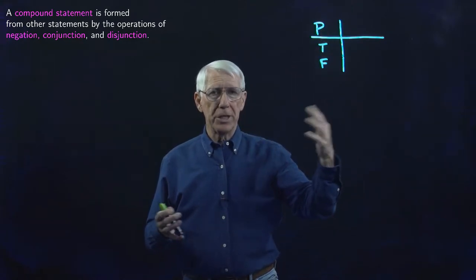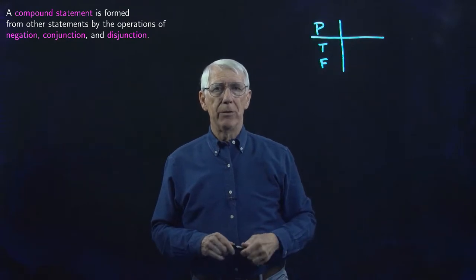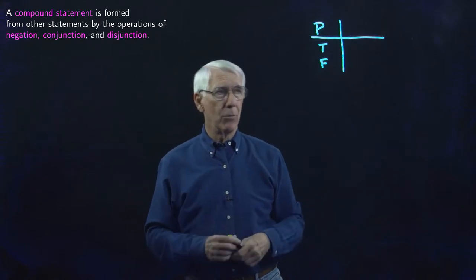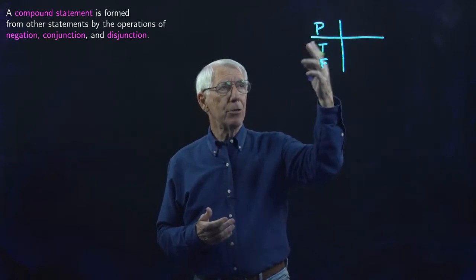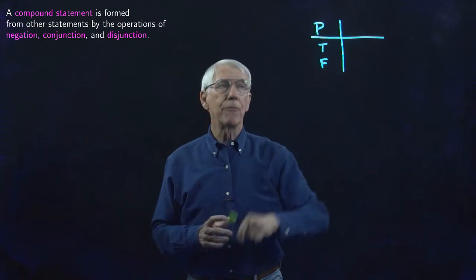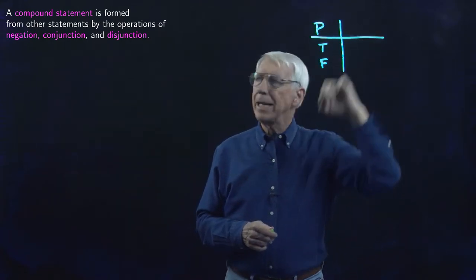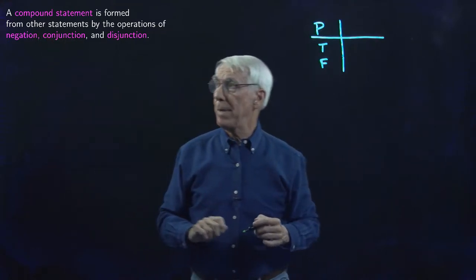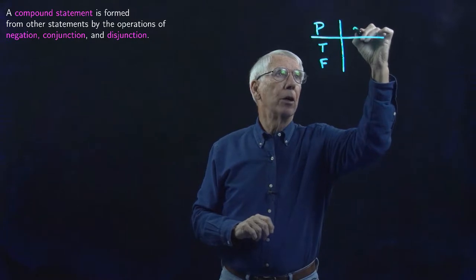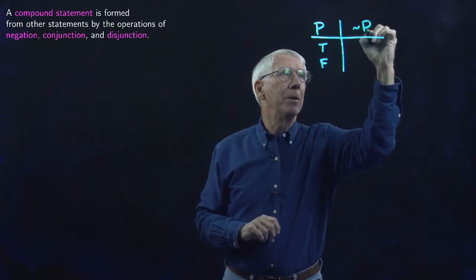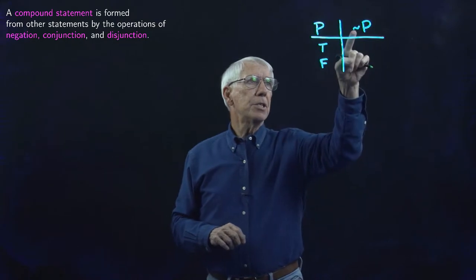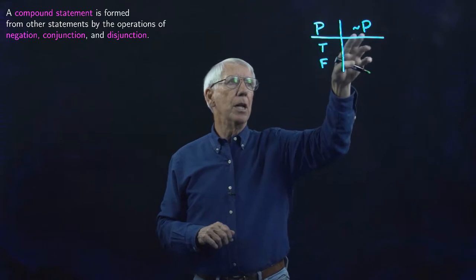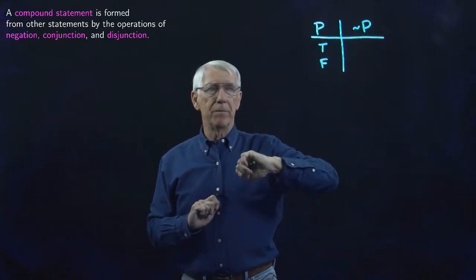That's a perfectly good statement, and it has a truth value. We would probably agree that if we interpret this as the sun appears to rise in the morning, the truth value would be T. But it has a truth value — could be T, could be F. This symbol here means the negation, means 'not.' So not P means the negation of P, the opposite of P.